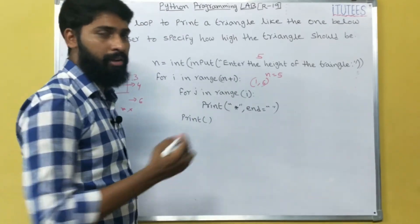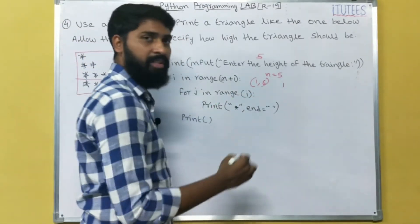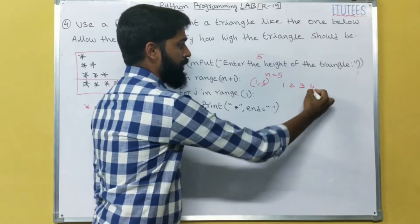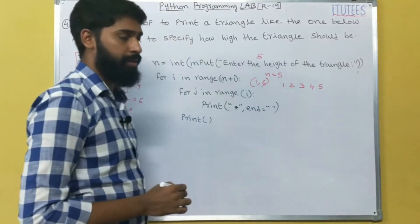What is the i value in first iteration? 1. In second iteration, 2. Third iteration, 3. Fourth iteration, 4. In fifth iteration, 5.